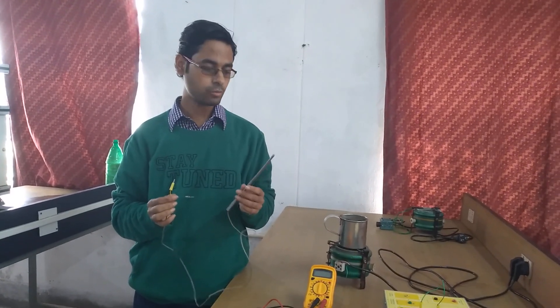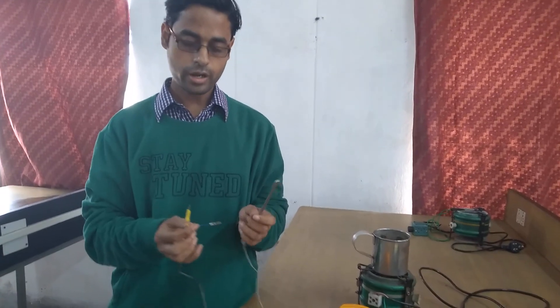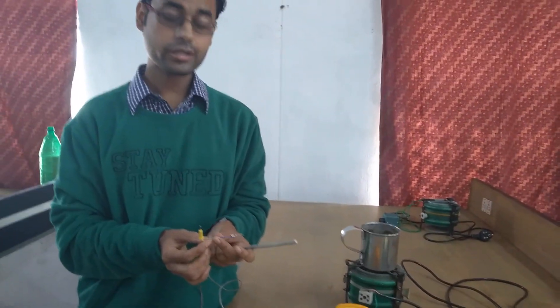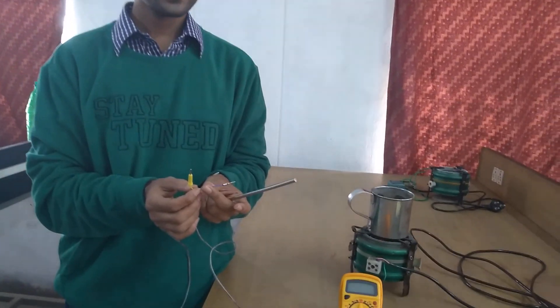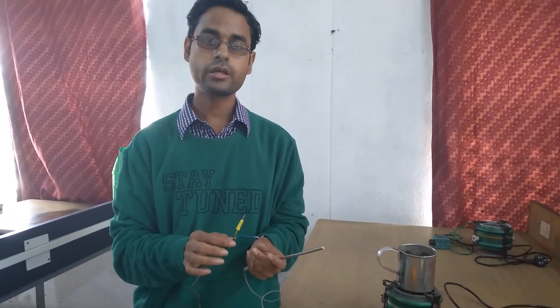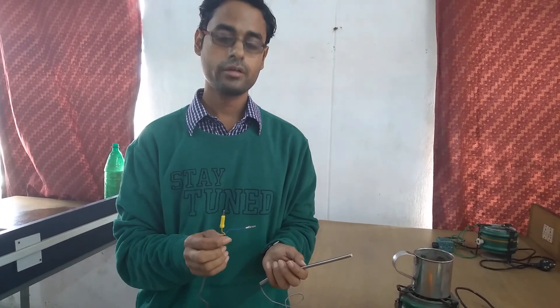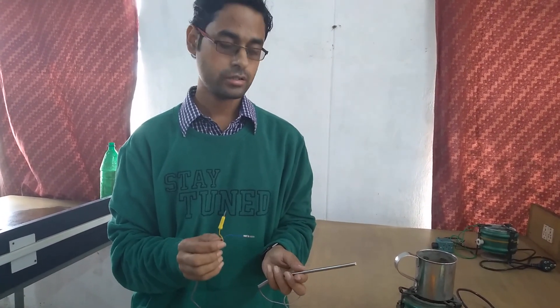So this is the thermocouple which is inside the thermowell, and this time you find that there are two wires coming out. This is unlike the RTD where we had seen that it was a three wire RTD, so three terminal wires had been available for the RTD connection.